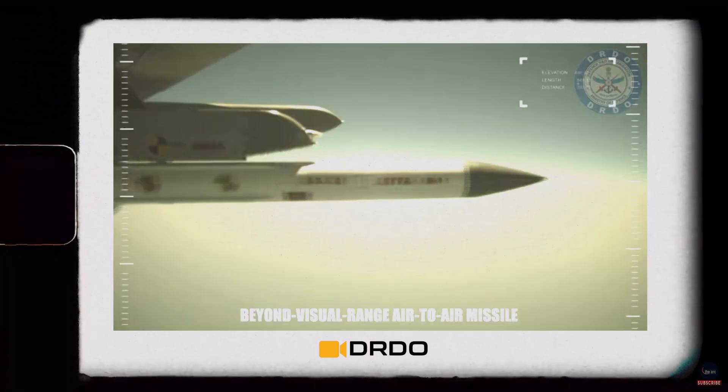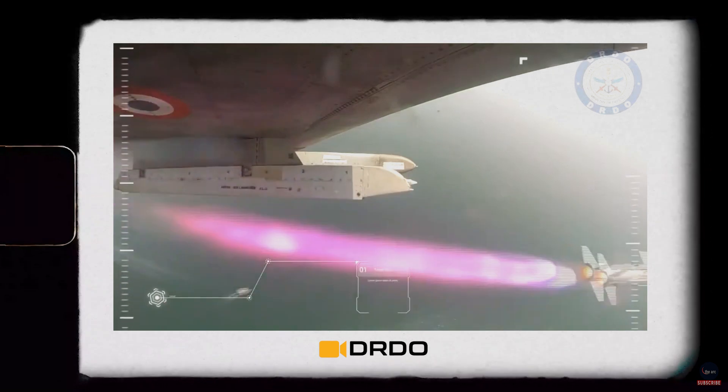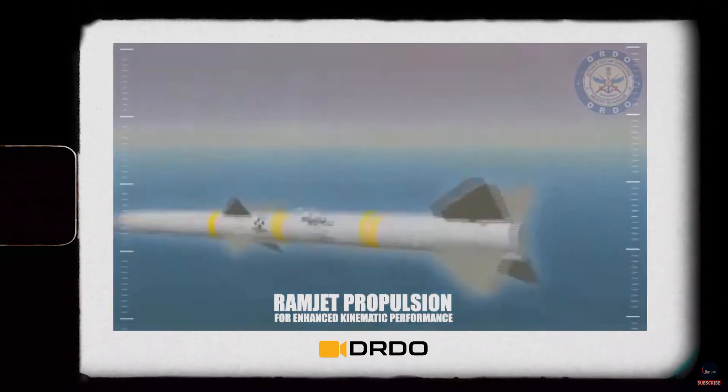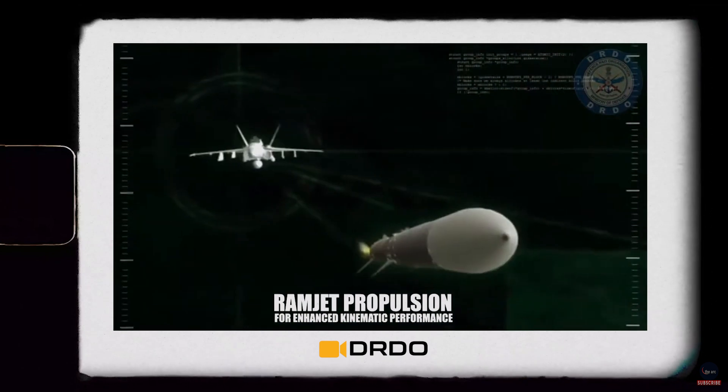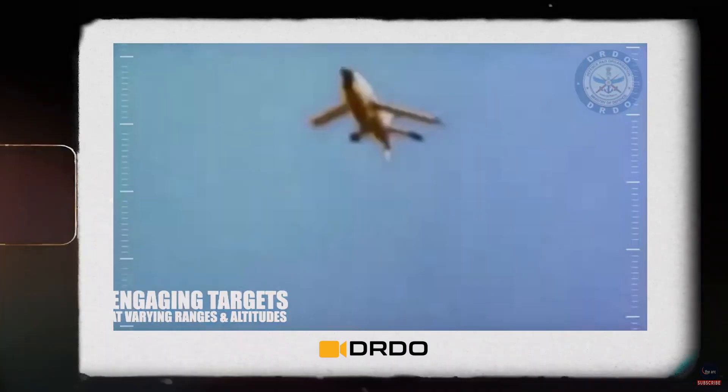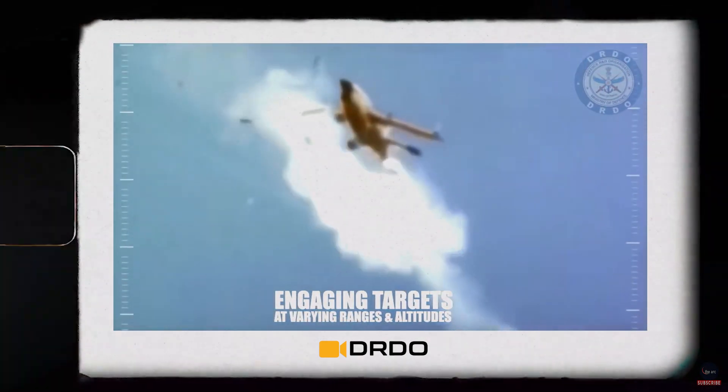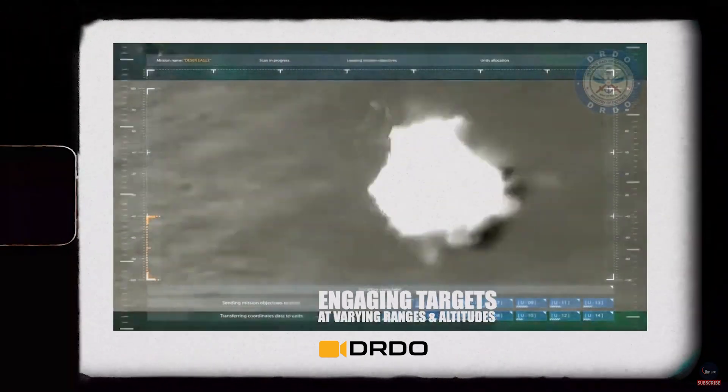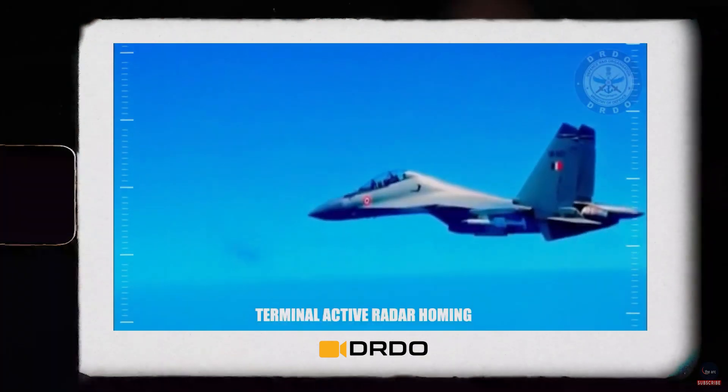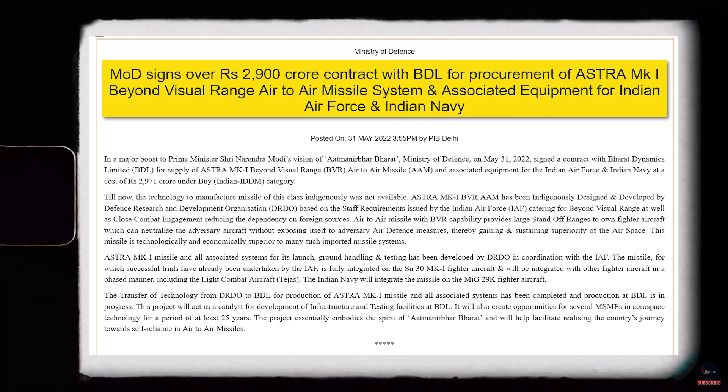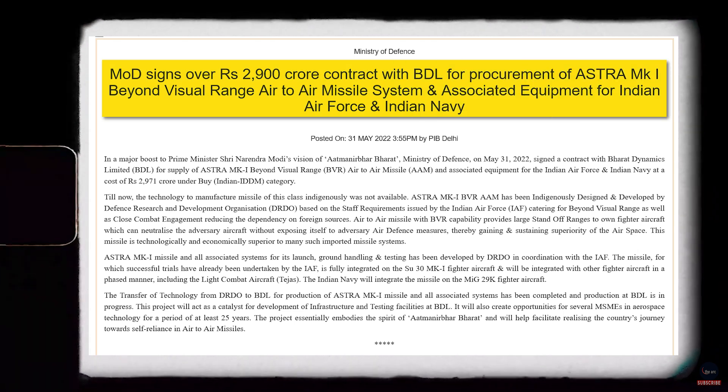The Astra AAM program was launched in the 2000s. It's an indigenously developed beyond-visual-range air-to-air missile with a range of 80-110 km. It's a state-of-the-art BVR missile, one of the best in its class. In 2022, government placed orders for the Astra Mk-1 missiles for the Indian Air Force and Navy worth Rs 3,000 crore. Astra Mk-1 has already been integrated with Indian Air Force's Su-30 MKI, LCA Tejas and Indian Navy's MiG-29K fighters.